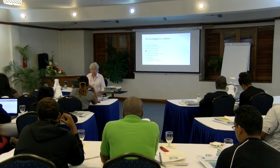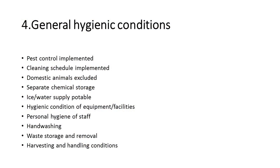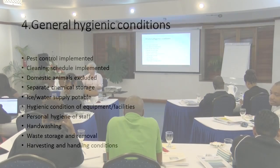You're also looking at general hygiene conditions — the standard sanitation operating procedures, the GHPs — which are much the same kind of issues you'd want to look at in a processing establishment. So you're looking at pest control, cleaning schedules, exclusion of domestic animals, separate chemical storage, and if ice is used on the farm for distribution, that it has proper storage conditions from a potable water supply, hygiene conditions including for staff — hand washing, toilets — all of these need to be in place.